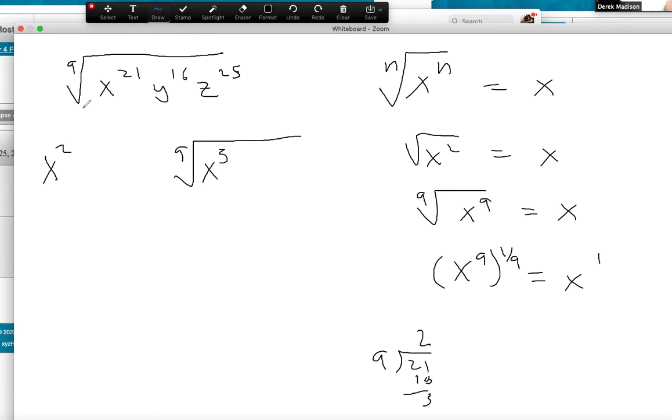So nine goes into 21 two times with three left over. That's the math. But it's because there's two sets of nine, so two come out. And these left over three, I have to have nine to be able to take them out, so I don't have enough, so they stay in.